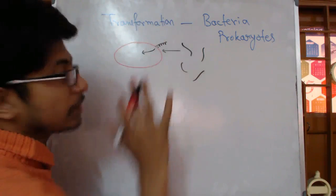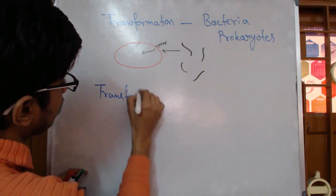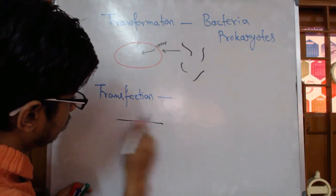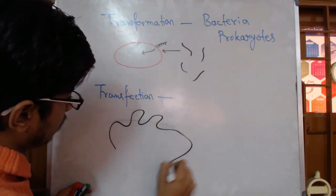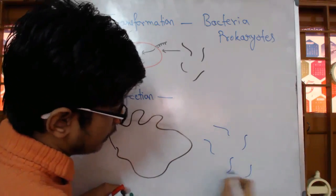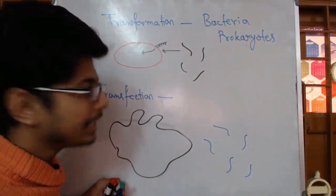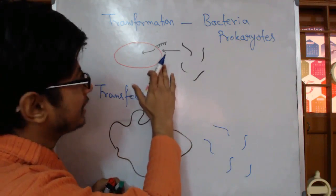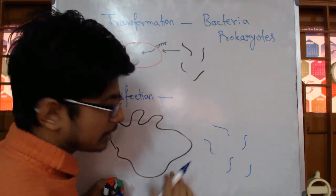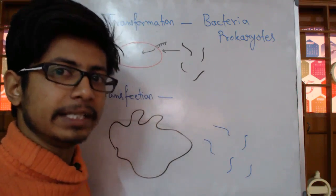If you look at transfection, the idea is almost kind of the same. This is the eukaryotic cell, and there is a fragment of DNA present outside. Now the delivery of this DNA fragment inside the eukaryotic cell requires something more complex, not that easy like it is done in case of bacteria or prokaryotes, because eukaryotes are a much more complex system to deal with. So there is no direct natural process. Eukaryotic cells cannot naturally uptake DNA or genetic segments, not naturally.